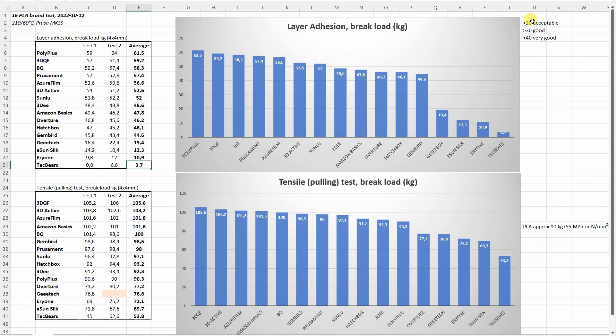Basically everything which is above 20 kg is acceptable, above 30 is good, above 40 is very good. So basically only these three filaments.